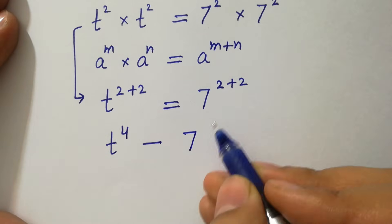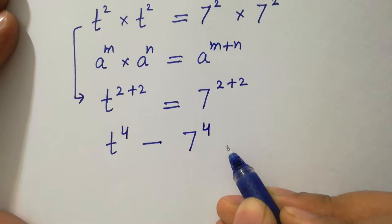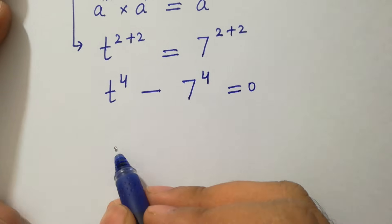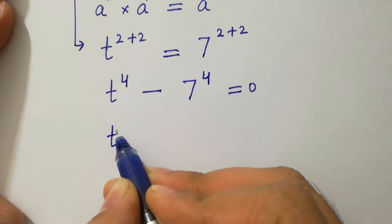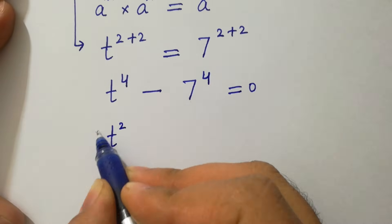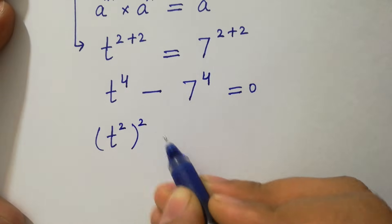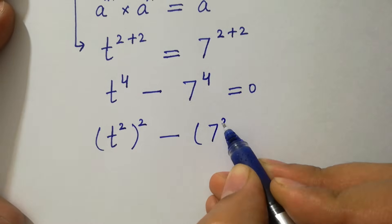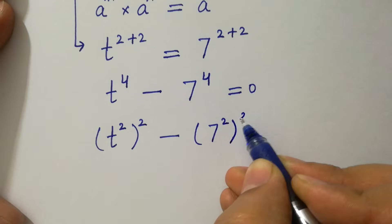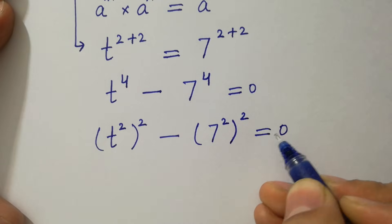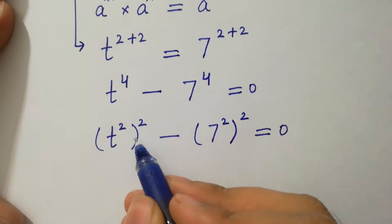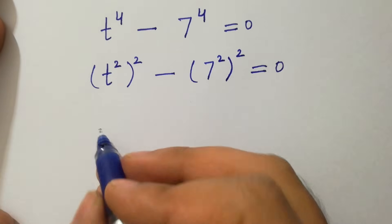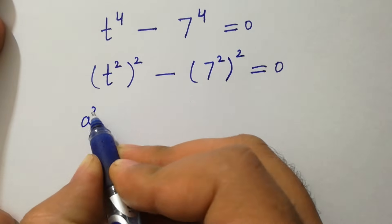t to the power 4 minus 7 to the power 4 equals 0, which is the same as (t²)² minus (7²)² equals 0, since 2 times 2 is 4.